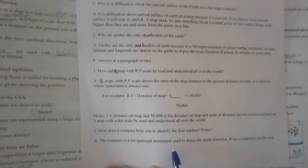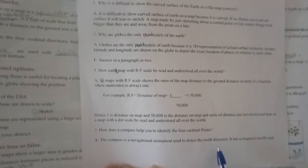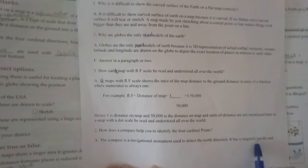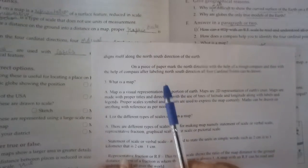How does compass help you to identify 4 cardinal points? Compass is a navigation instrument used to detect the north direction. Magnetic compass always denotes the north-south direction. The arrow point always denotes the north side. It has a magnetic needle and aligns itself along the north and south direction of earth. On a piece of paper, mark the north direction.